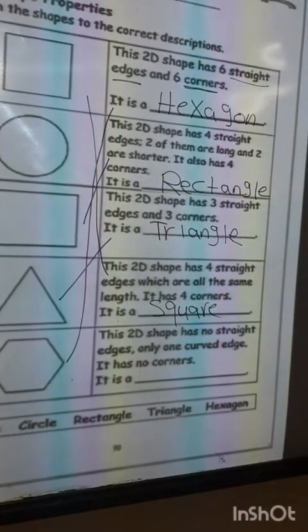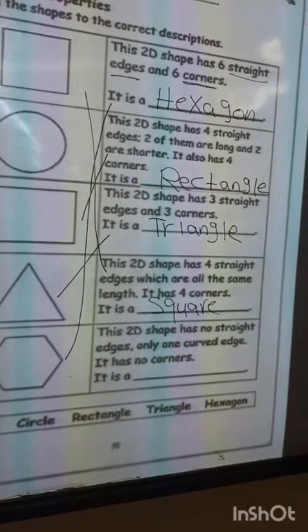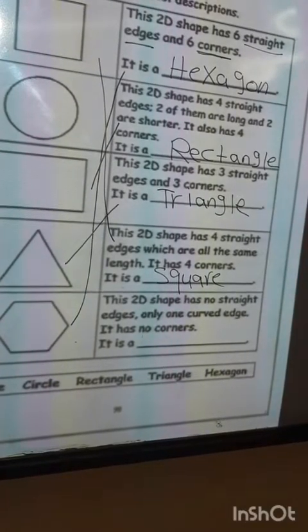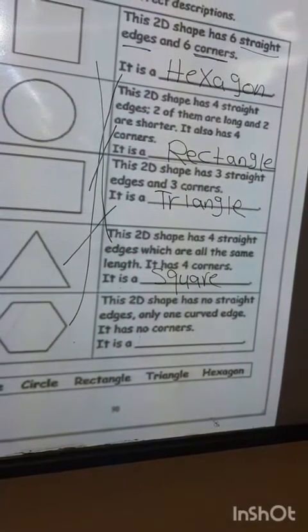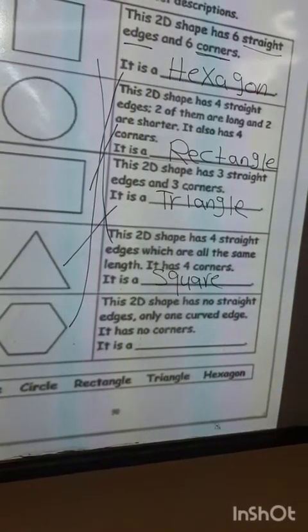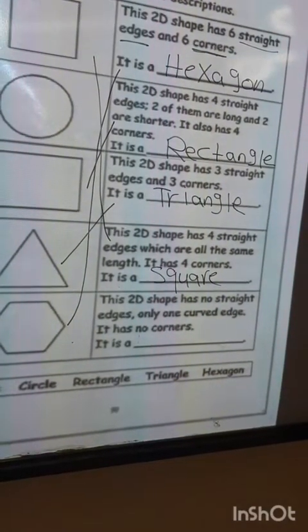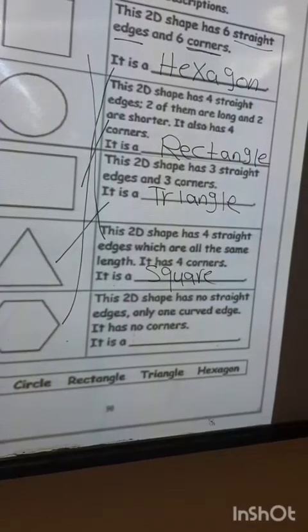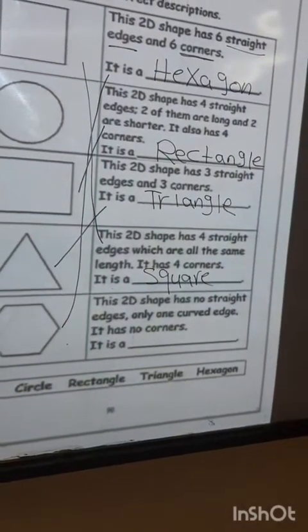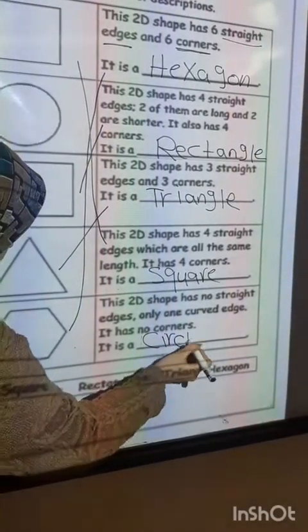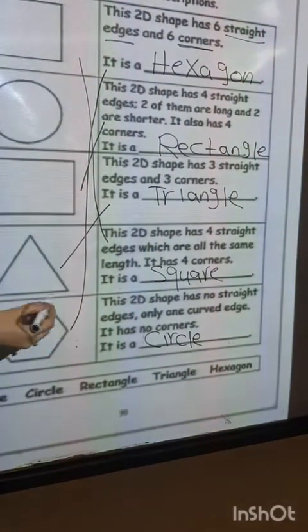This 2D shape has no straight edges, only one curved edge. It has no corners. What's the shape? That's right, circle. And join the circle.